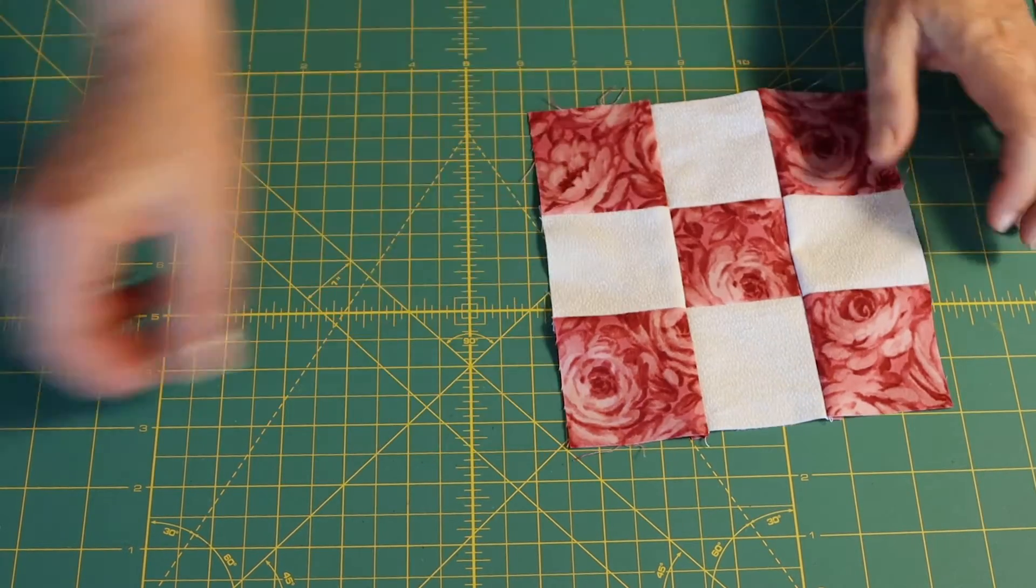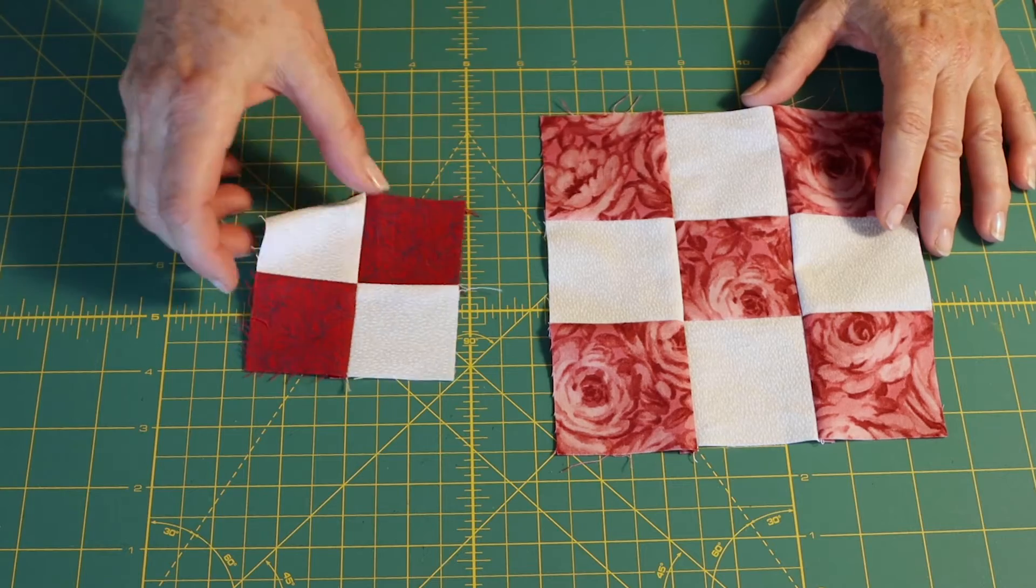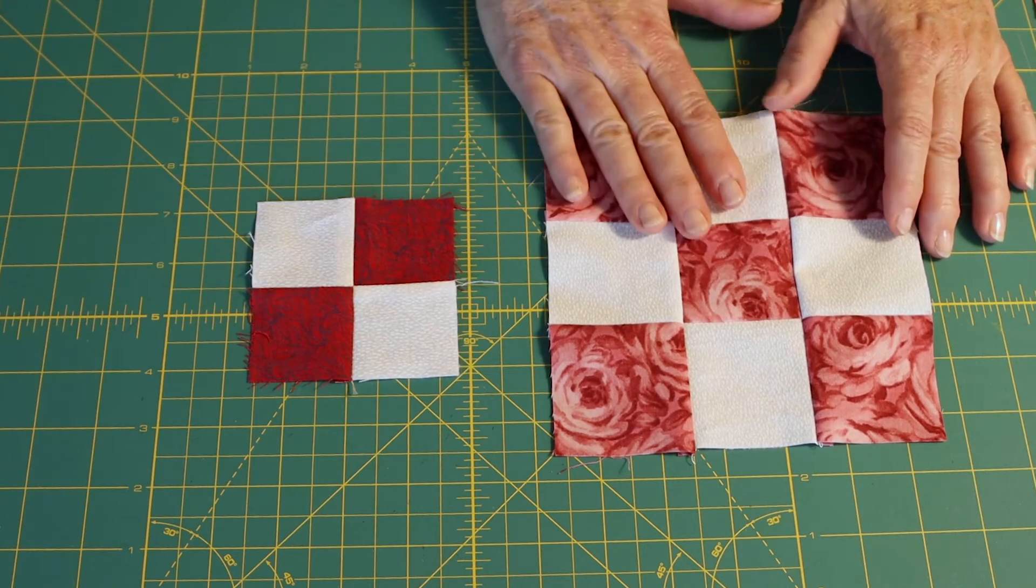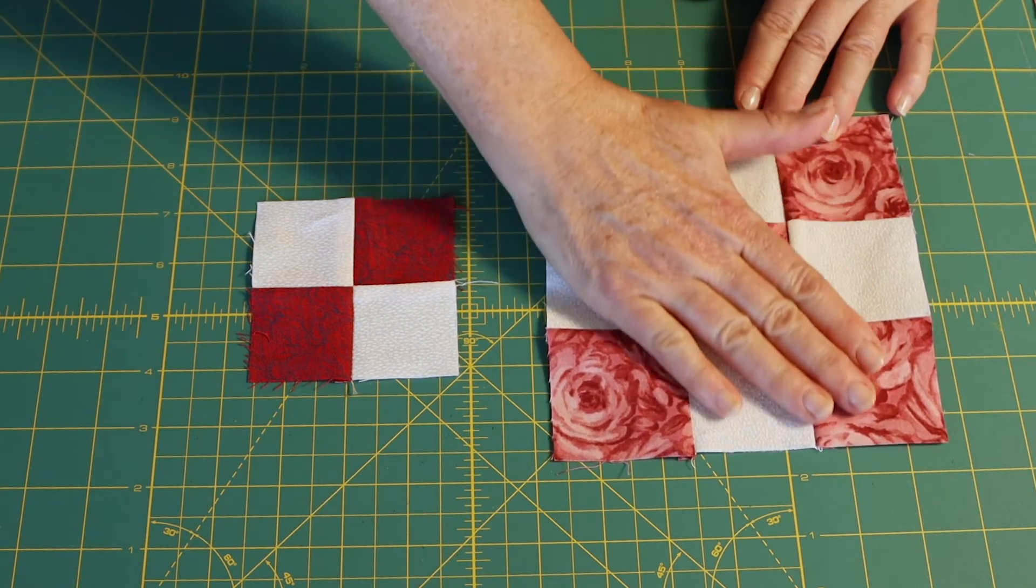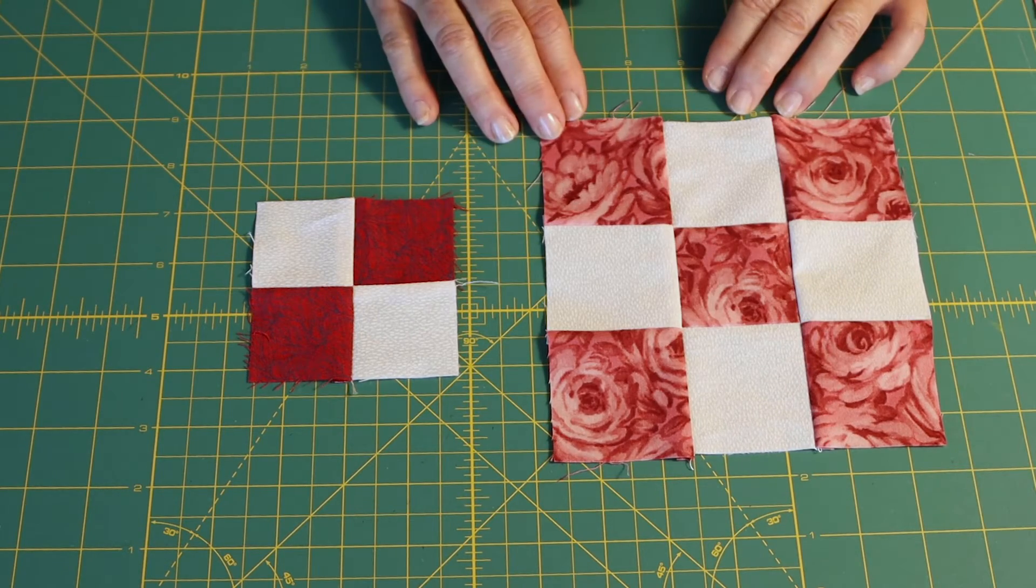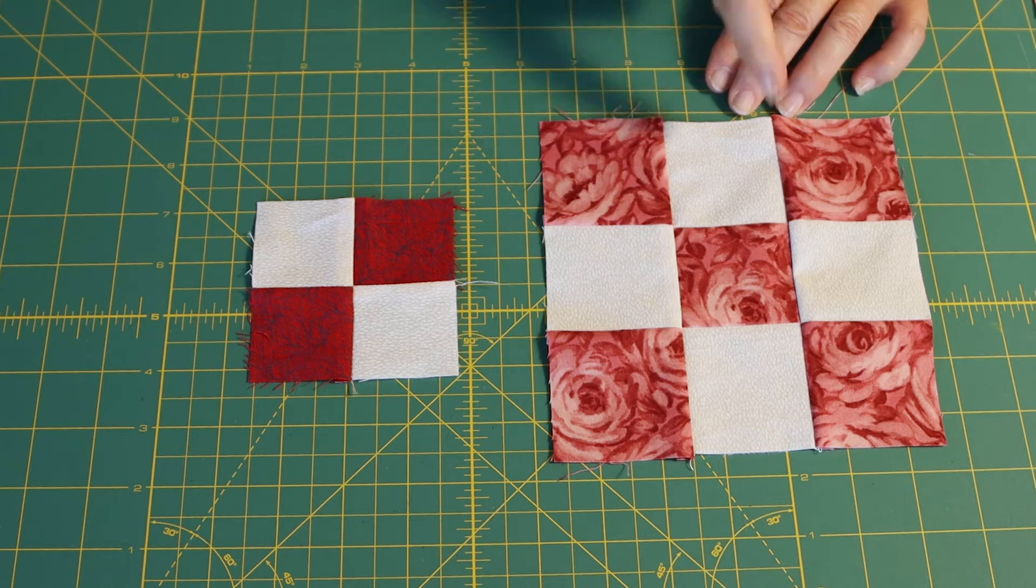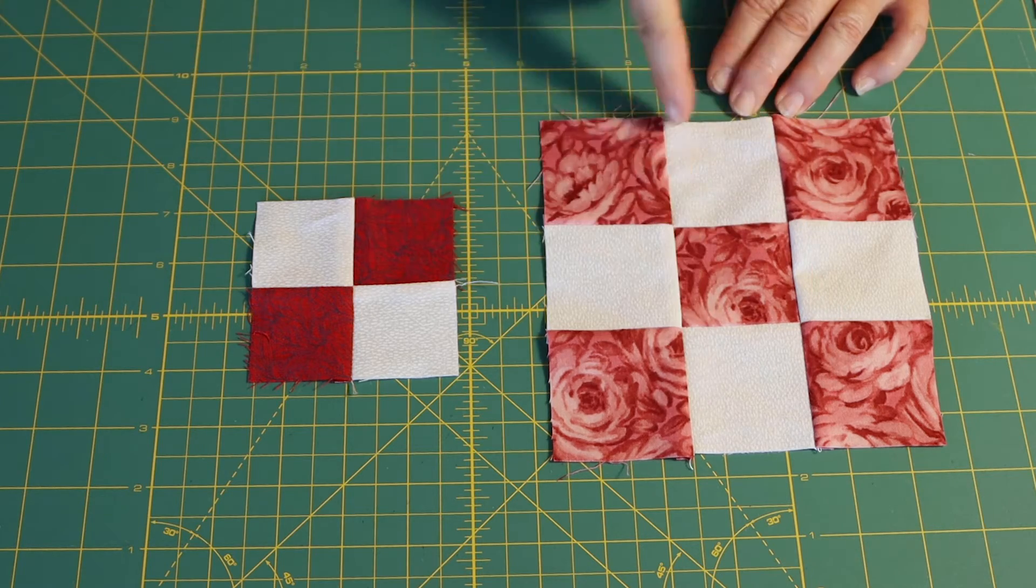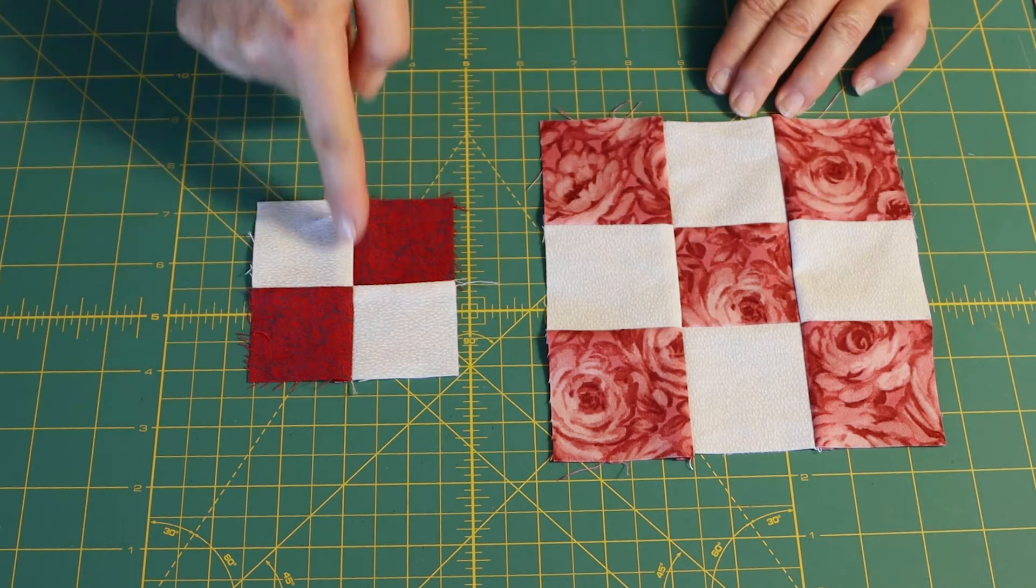The goal here, regardless of whether you're doing the four patch or the nine patch, is that everything is lying nice and flat. You don't have any built-up seams, and if you're into precision, you have nice straight lines coming through all your seams.